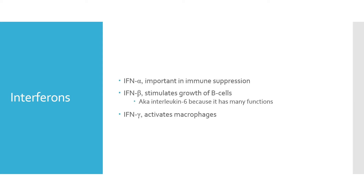There are three types of interferons: interferon alpha, interferon beta, and interferon gamma. Interferon alpha is important in immunosuppression. Interferon beta stimulates the growth of B cells and is sometimes referred to as interleukin-6 because it has many functions. Interferon gamma activates macrophages.